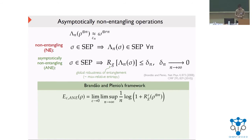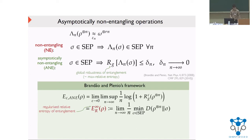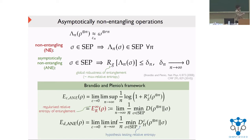They studied conversions of states under these operations. They found that the cost under these operations equals a regularization of the global robustness of entanglement, which actually equals the regularized relative entropy of entanglement — a generalization of the entropy of entanglement from pure states to mixed states. This suggests we are on the right track. But to complete this theory, we need the distillable entanglement to match this cost. Brandao and Plenio found that the distillable entanglement under these operations equals the asymptotic error exponent in quantum hypothesis testing between a given state rho and all separable states.